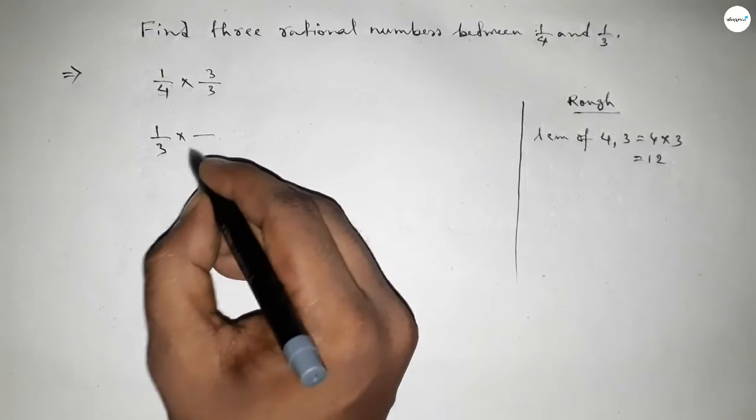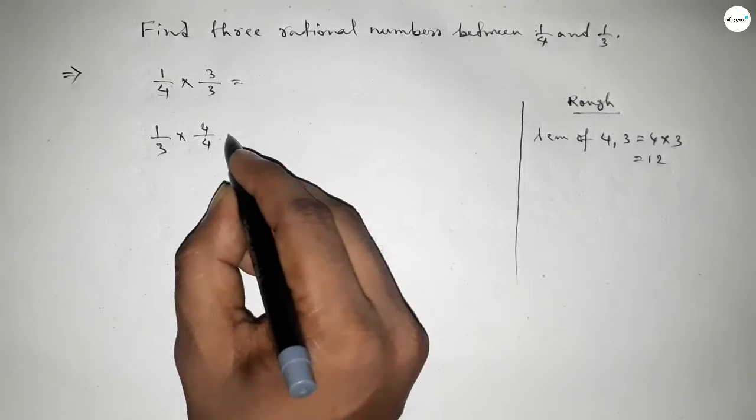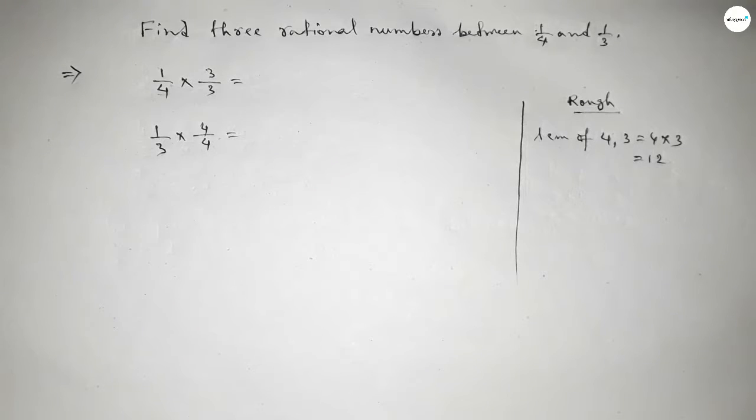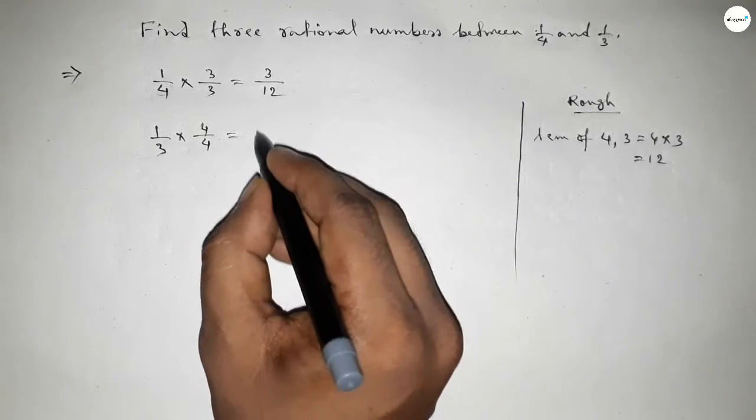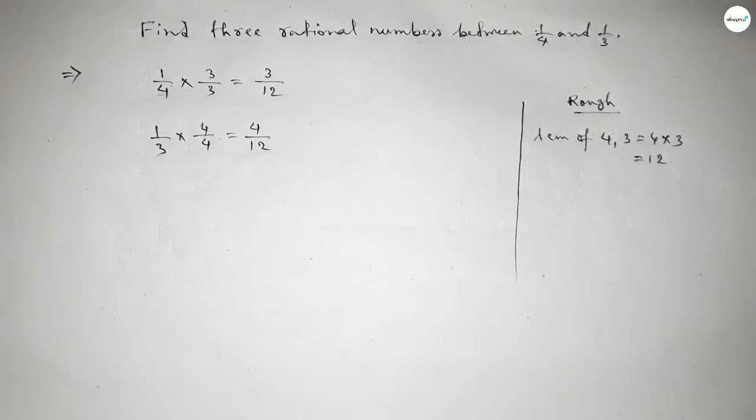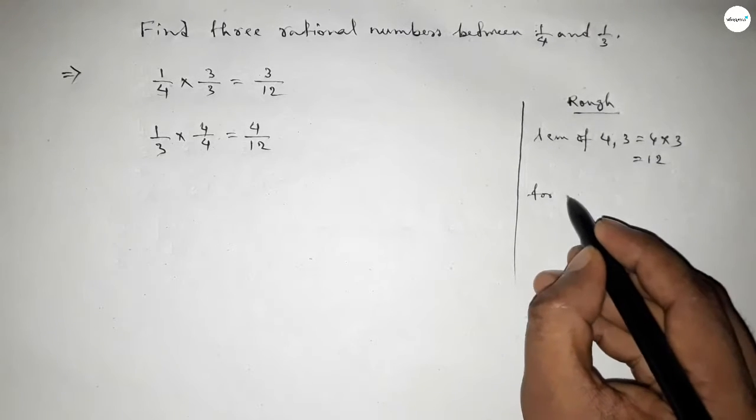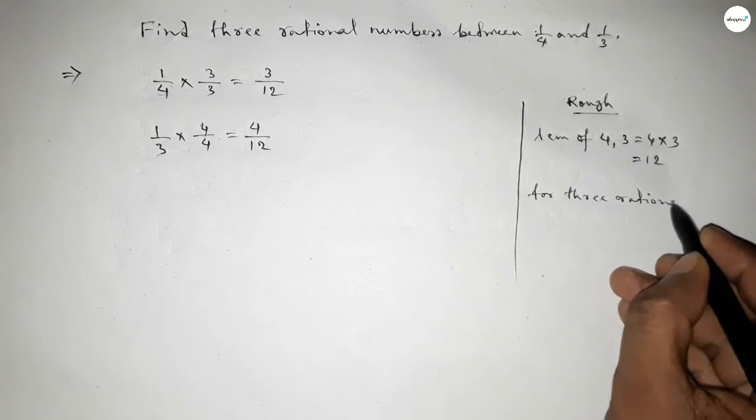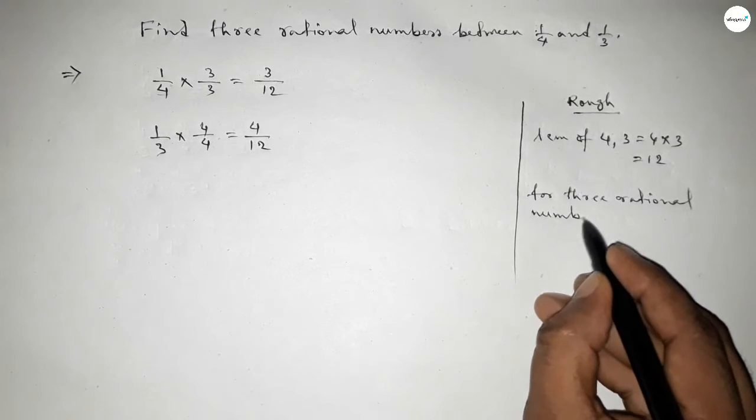What should we multiply both by to get the denominator 12? If we convert them this way, this is 3 over 12 and this is 4 over 12.